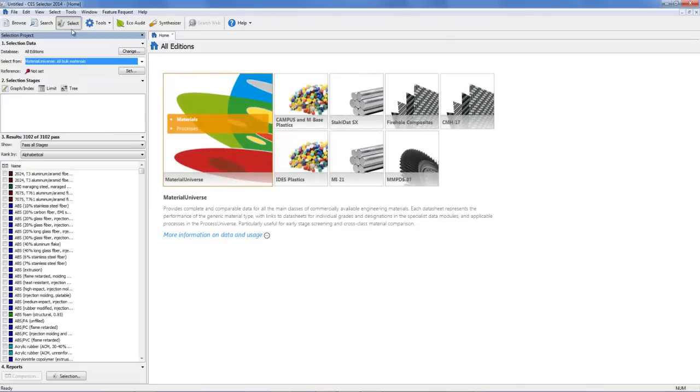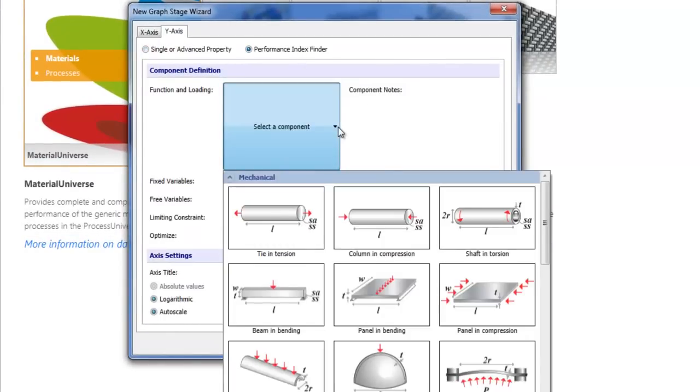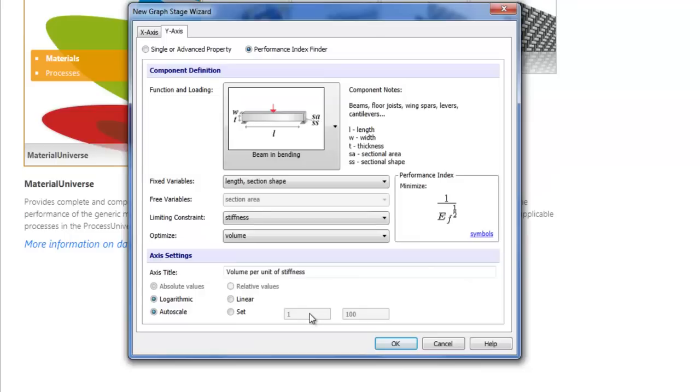We can consider the fork as a beam loaded in bending. It's a stiffness-limited design. We don't want them to flex too much in use and we want to minimize mass. This tells us for a light, stiff beam in bending, we need to select materials with a low value of density divided by the square root of flexural modulus.